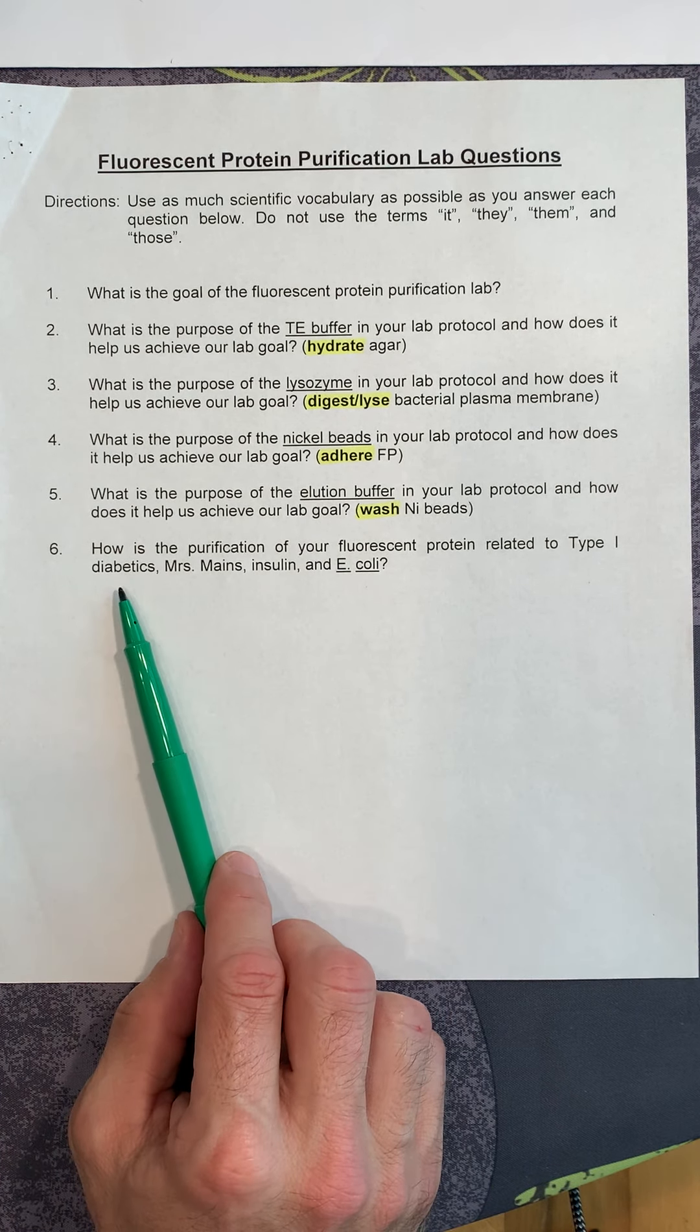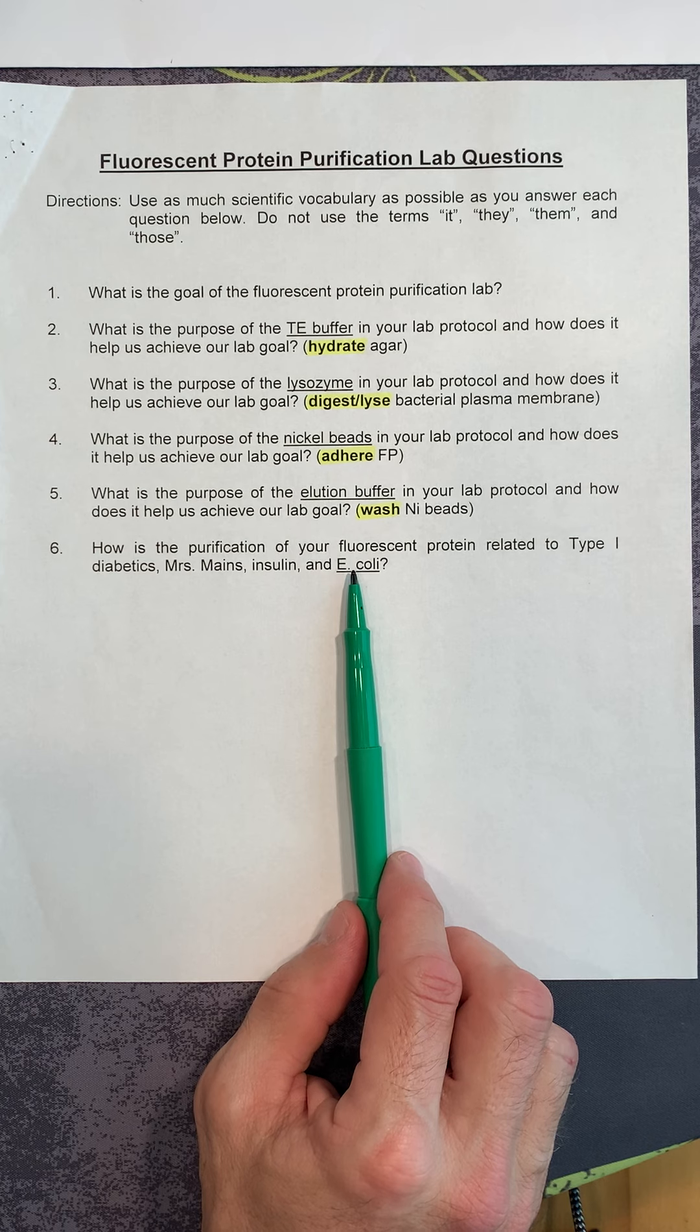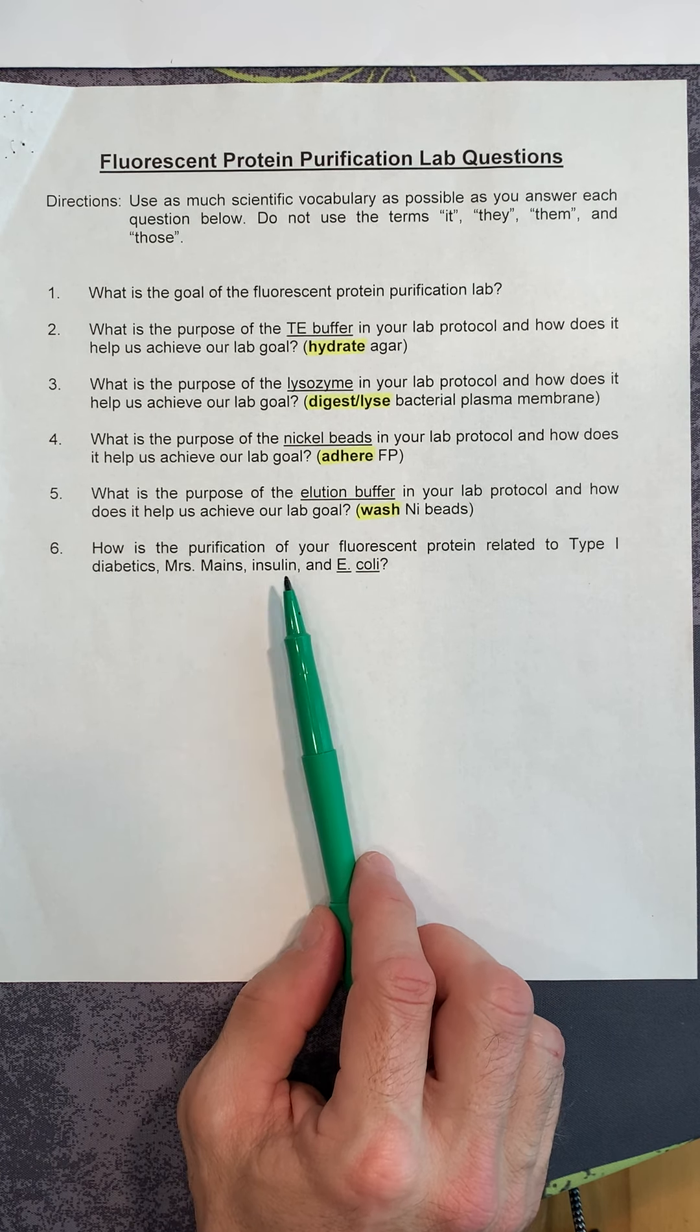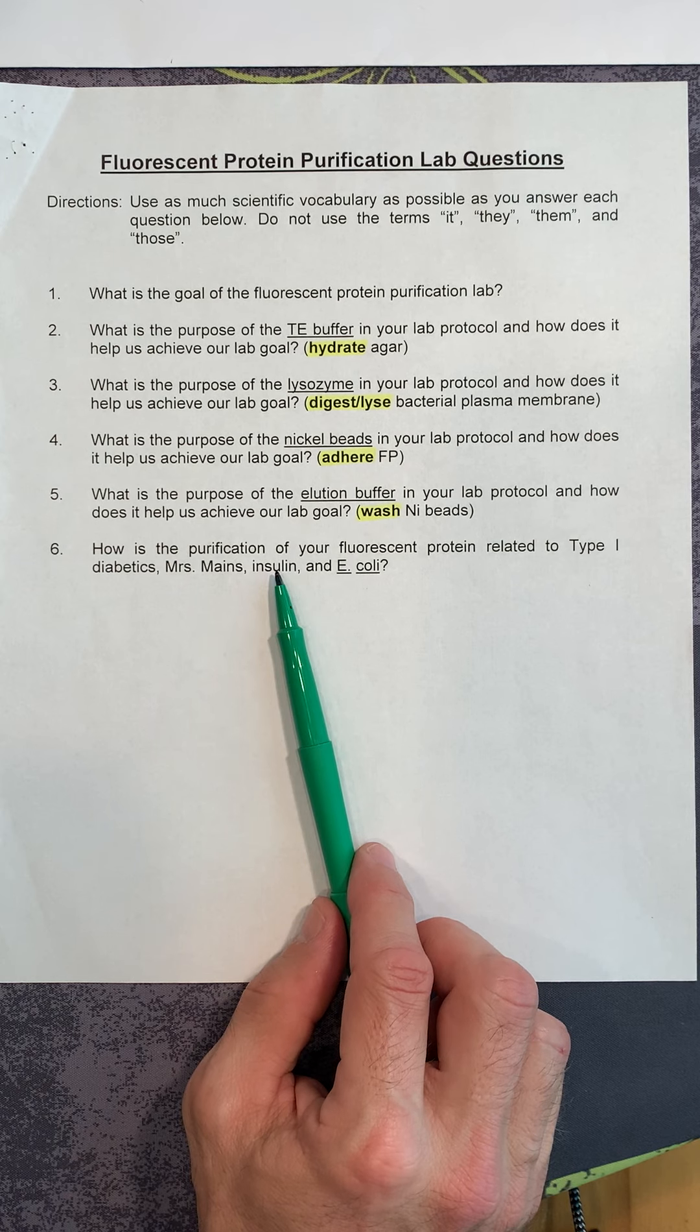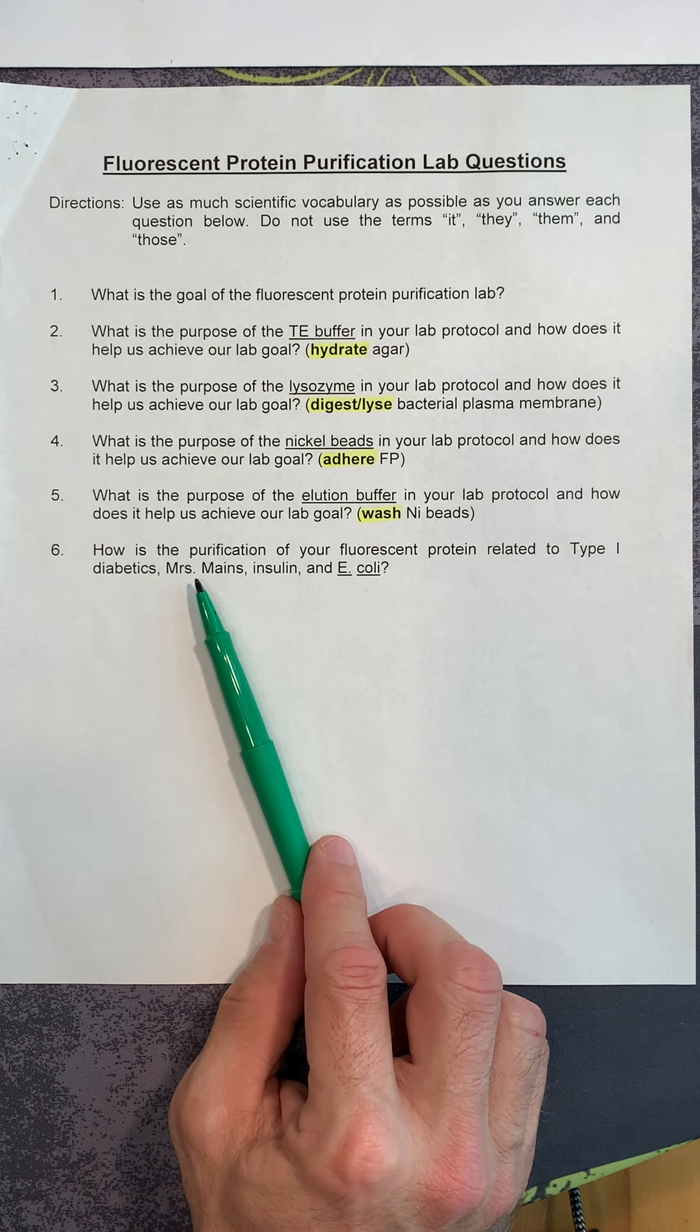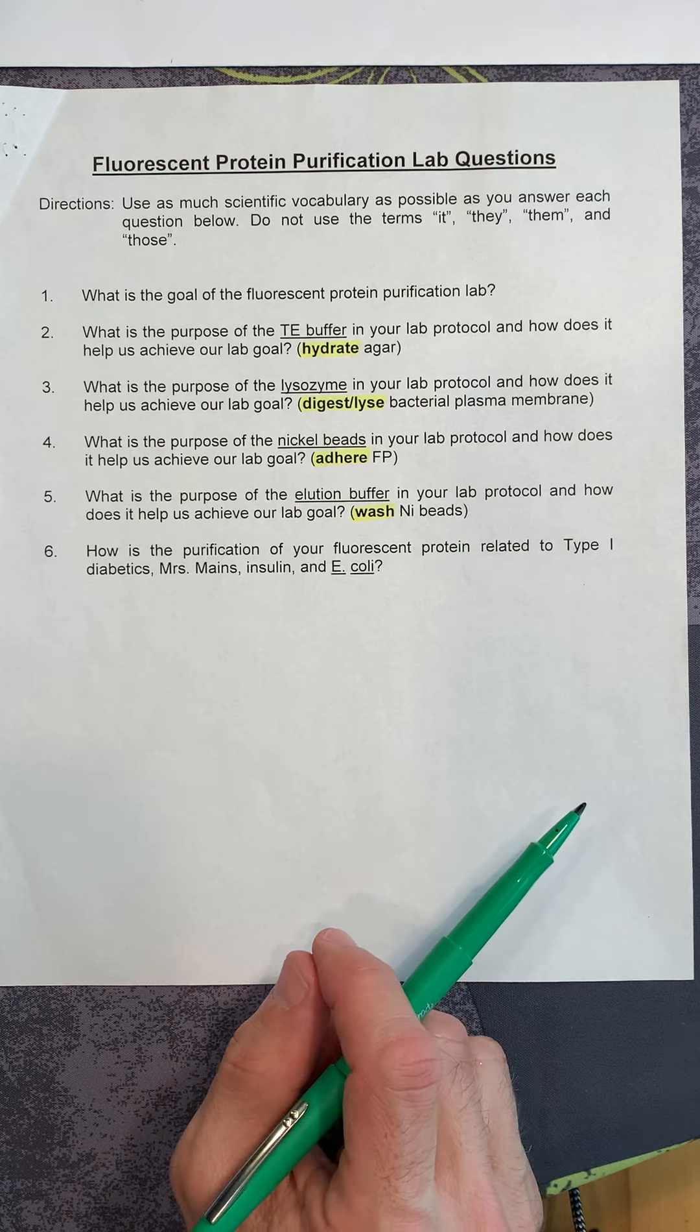Then how is the purification of your fluorescent protein related again to type 1 diabetes, Mrs. Maines, and E. coli? E. coli is a bacteria found everywhere. We genetically modify E. coli with the human insulin gene. The E. coli then reads that DNA and produces the protein insulin. We then take that insulin and put it into bottles and sell it to type 1 diabetics like Mrs. Maines, who is an English teacher on campus over in the 500 building.